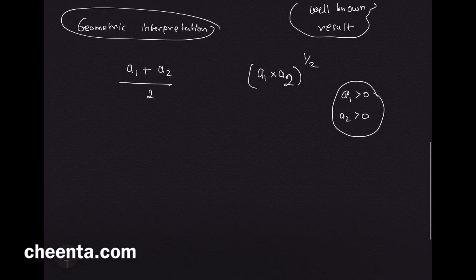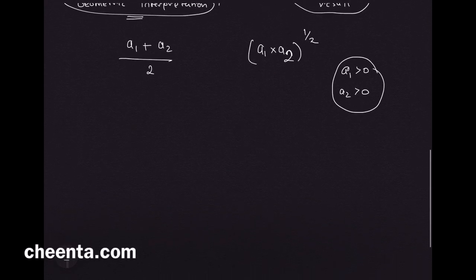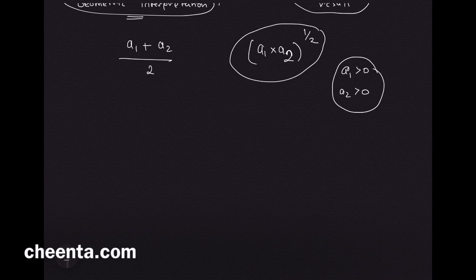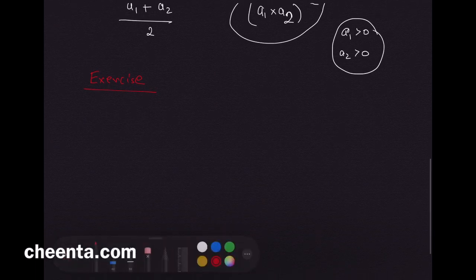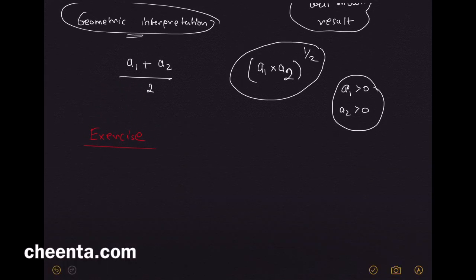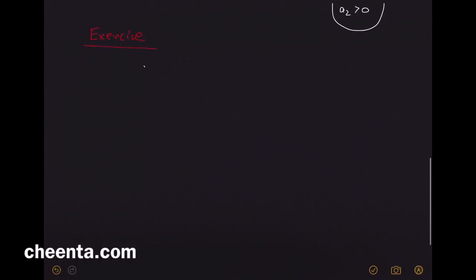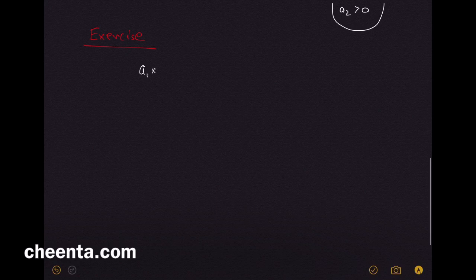We want a geometric interpretation of this, but first let's look at how can we construct the square root of a₁ times a₂. This can be a little exercise and you can look in the link in the description. It will take you to a small quiz which will help you to solve this problem.